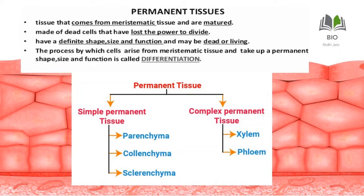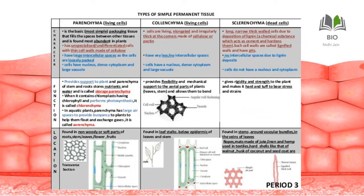Parenchyma is the basic packaging tissue that fills the spaces between other tissues and is found in most abundance. It is un-differentiated, meaning it has no highly specific function. It has large intercellular spaces, nucleus, cytoplasm, and vacuoles. It provides and stores nutrients and water, which is why it is called storage parenchyma. When it contains chloroplasts, it is called chlorenchyma. If its intercellular spaces are filled with air, it is called aerenchyma.